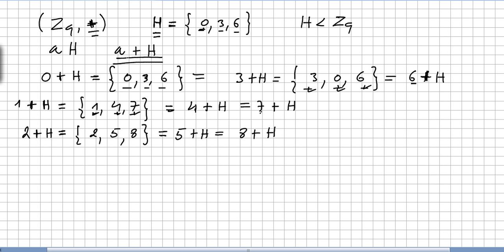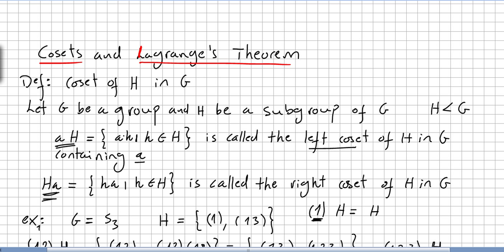So these are the left cosets of H, H being a subgroup of Z9. Restating: the left coset is a operation H — in the multiplication case it's aH, in the addition case it's a plus H. It depends on the operation.